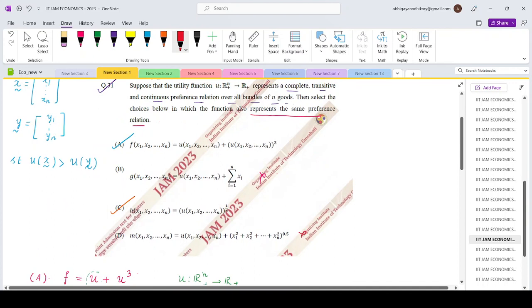A and C are the correct options. So there are two options in this case, option A and option C, that represent the same preference relation as you. Thank you.